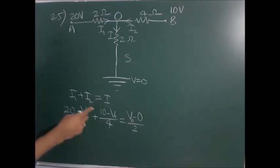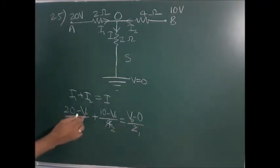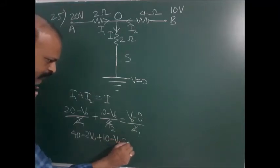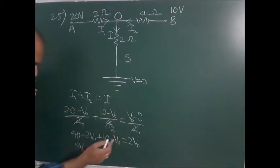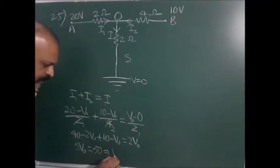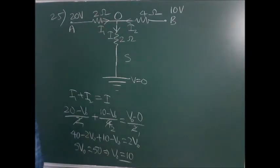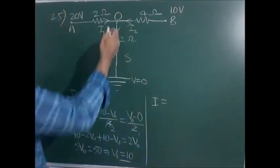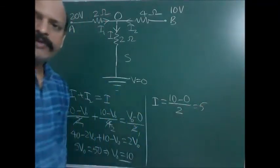Simplifying with a common multiplier: 40 - 2V0 + 10 - V0 = 2V0. Bringing V0 to one side: 5V0 = 50, so V0 = 10 volts. The current through the 2-ohm resistance is I = potential difference / resistance = 10 / 2 = 5 amperes.